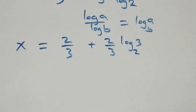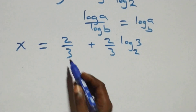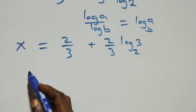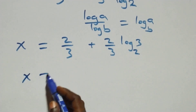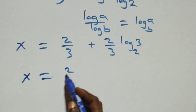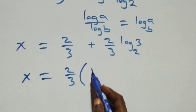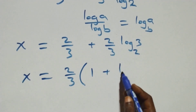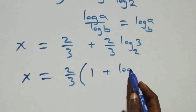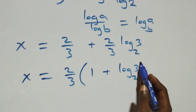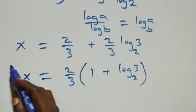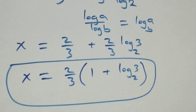Two over three is common, so we can write x equals 2 over 3 into bracket one plus log 3 to base 2. So we have the value of x as two over three times the bracket one plus log 3 base 2.